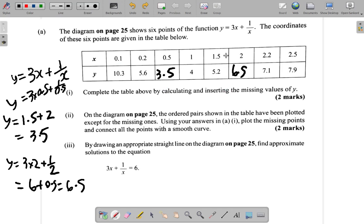Now that's how they got these other values. For example, when x is 0.1, y is 3 times x, but it's 3 times 0.1 plus 1 over 0.1. Now using a calculator, you'll see that 3 times 0.1 is 0.3, plus 1 over 0.1 is 10. So it's 10.3. So that's what they got, it's 10.3.